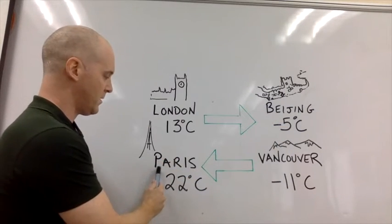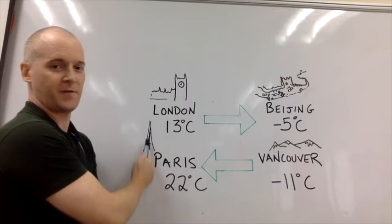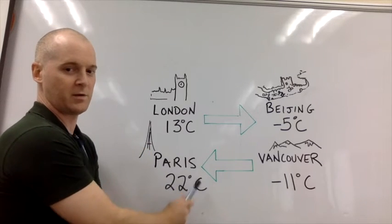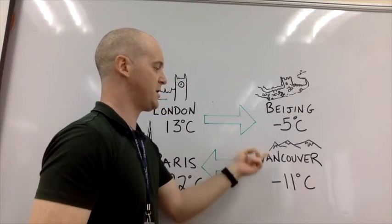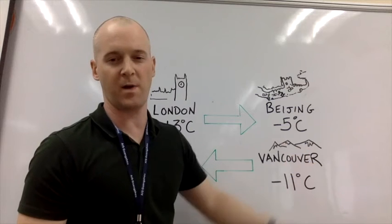And then lovely Paris with the Eiffel Tower at 22 degrees C, and then Vancouver, Canada, a chilly negative 11 C in the Rocky Mountains.